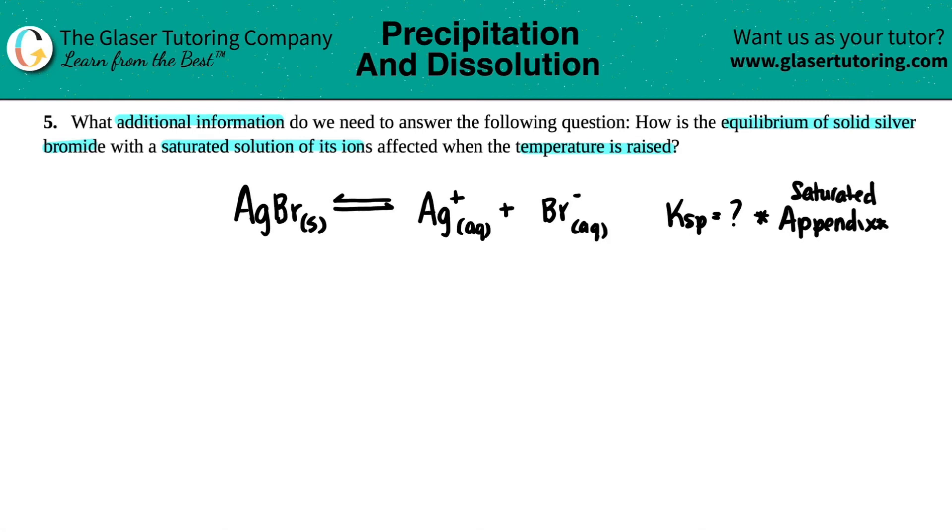But now what's going on is the temperature is being raised. So that's after this fact. The temperature is increasing. How are we going to know what that new equilibrium is all about? Well, if we had a KSP before, that's the appendix value. That's like a standard value. If we increase that temperature, we would have to know what the KSP is afterwards.